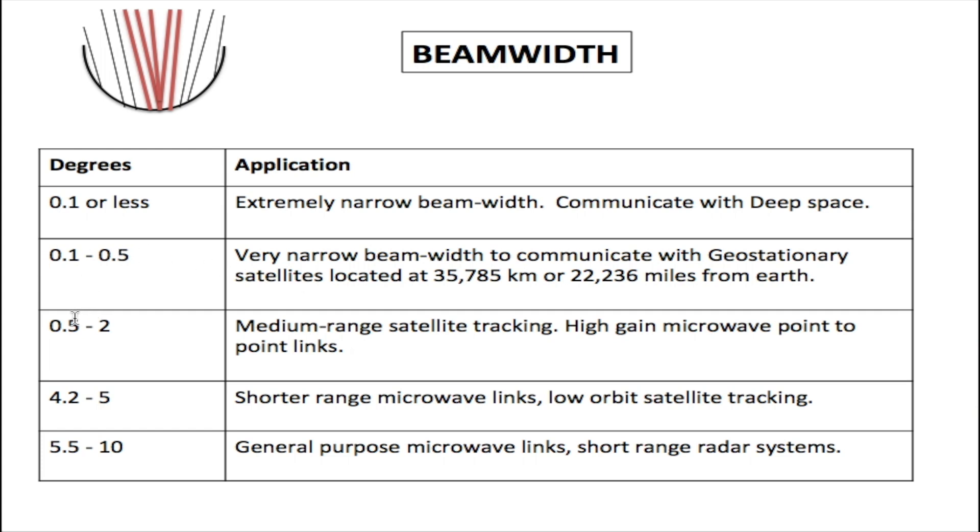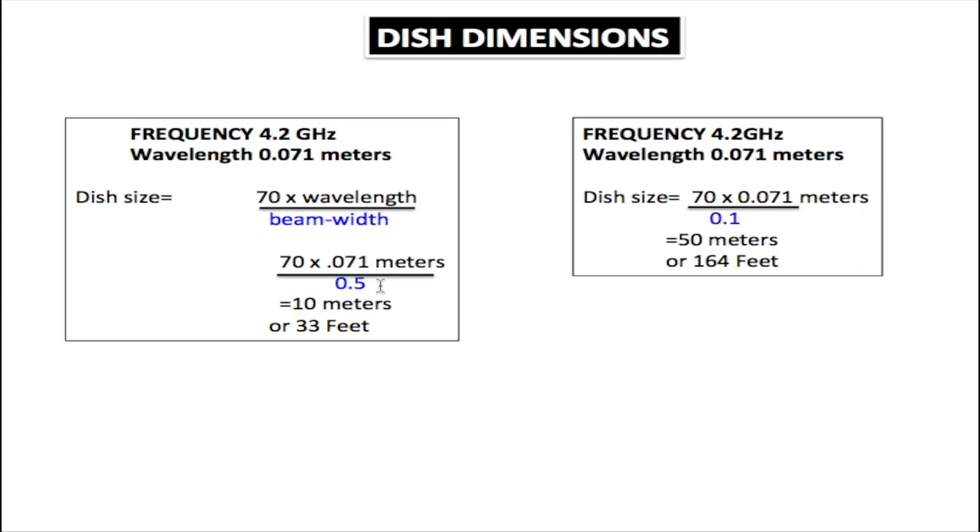We have 0.5 to 2 which is for medium range satellite tracking and high gain microwave point-to-point links. From 2 to 5 for shorter range microwave links and low orbit satellite tracking. From 5.5 to 10 degrees we have general purpose microwave links and short range radar systems. We're going to be using 0.1 and 0.5 for our purpose. That is how we got 0.5 for the beam width. We simply picked it.